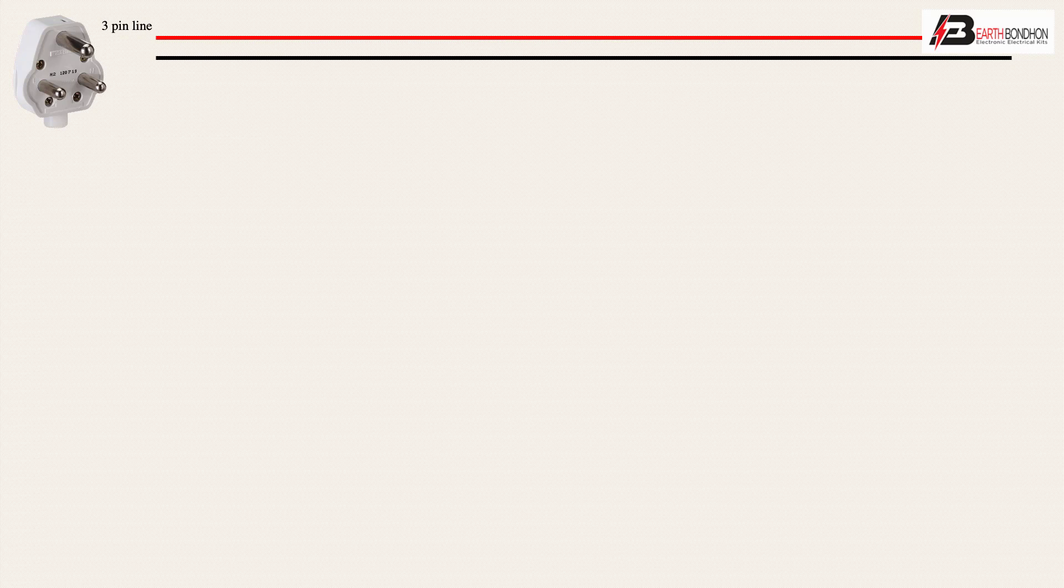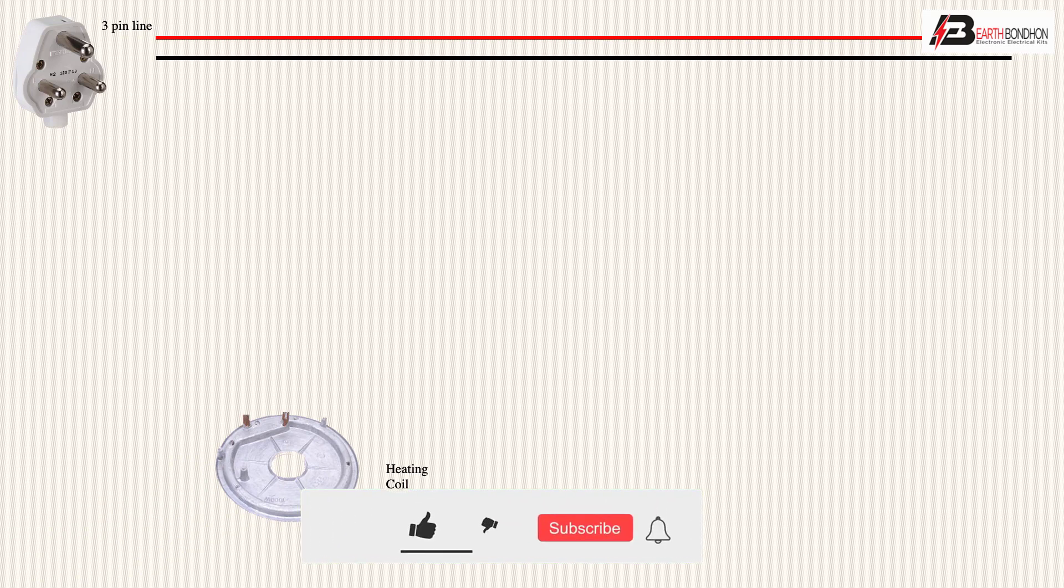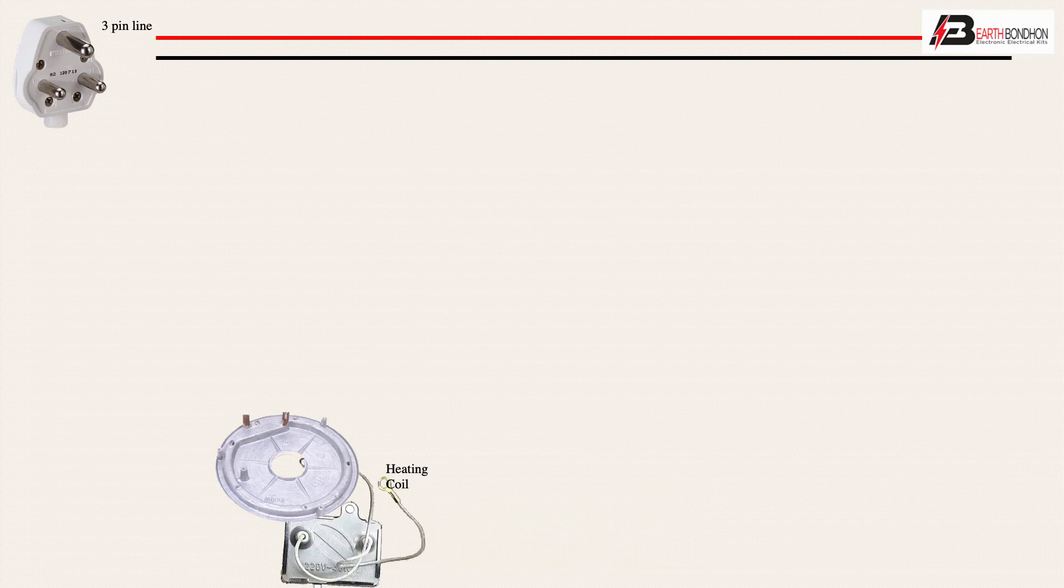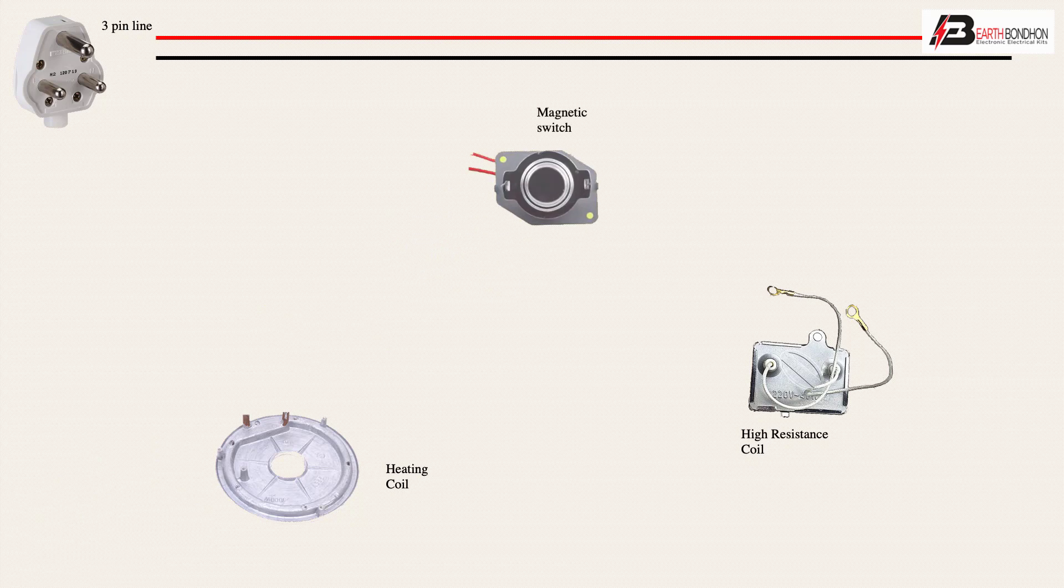Black line is neutral. Heating coil, heater coil 1800 watts, high resistance coil, and magnetic switch for automatic control. The rice cooker control.